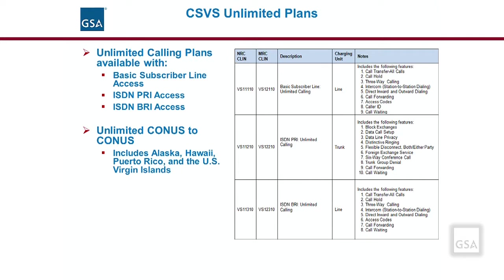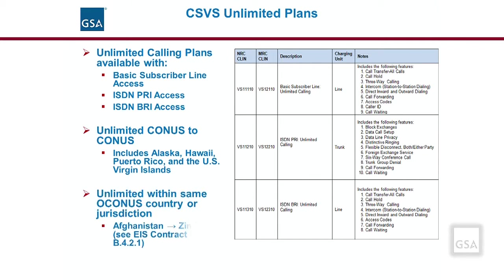The CONUS to CONUS unlimited calling plan includes the continental U.S. as well as Alaska, Hawaii, Puerto Rico, and the U.S. Virgin Islands. A number of OCONUS countries and jurisdictions also support unlimited calling plans.